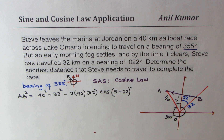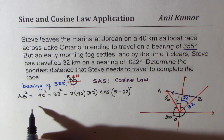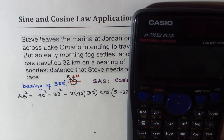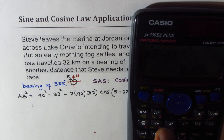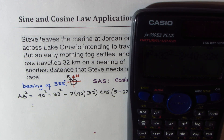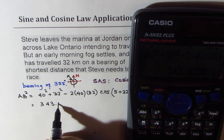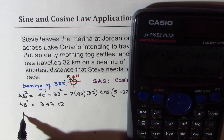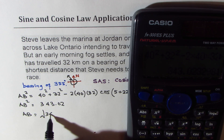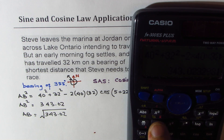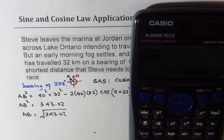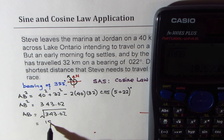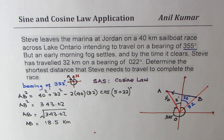We can now use the calculator to figure this out. So we have 40 squared plus 32 squared minus 2 times 40 times 32 times cos(27), which equals 343.02 — that is AB squared. So the distance AB will be the square root of this. Taking the square root, we get a value of 18.5 kilometers.